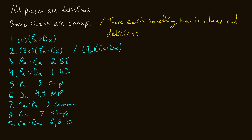Then we simplify to just get CA — that came from line seven and simplification. On line nine, we get CA and DA, which is what we want, from lines six and eight, conjunction. Then finally, we can existentially generalize and say there exists an x such that x is cheap and x is delicious — line nine, existential generalization.